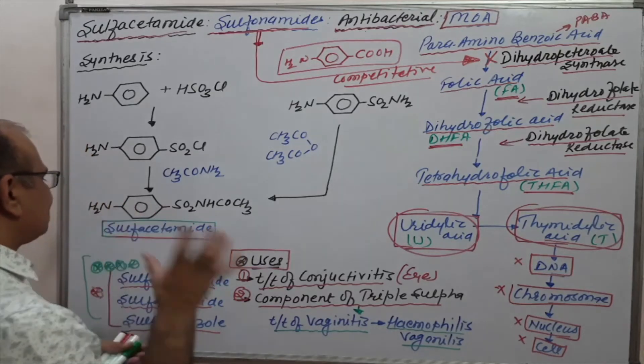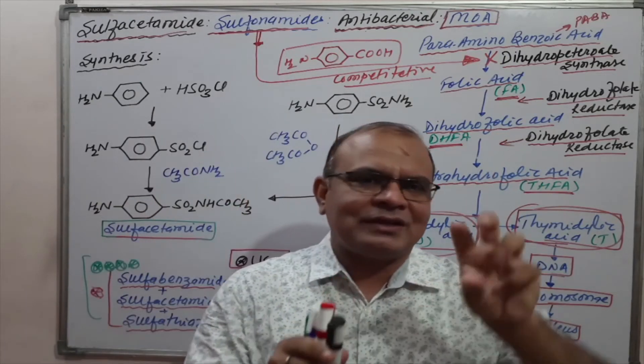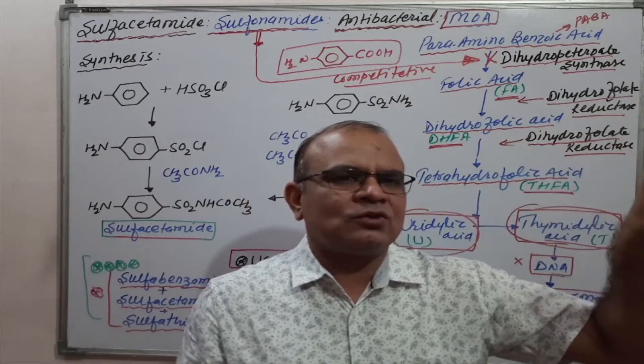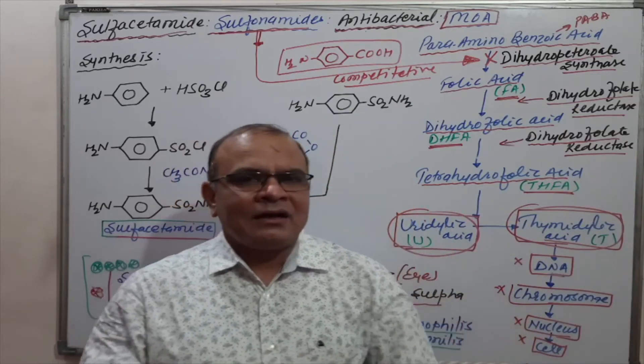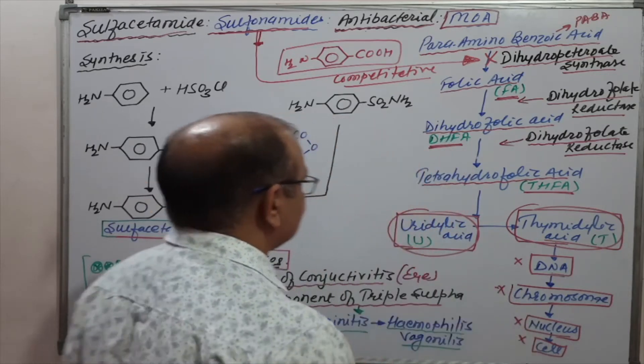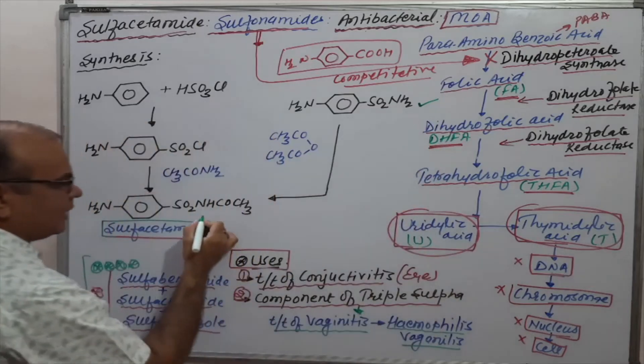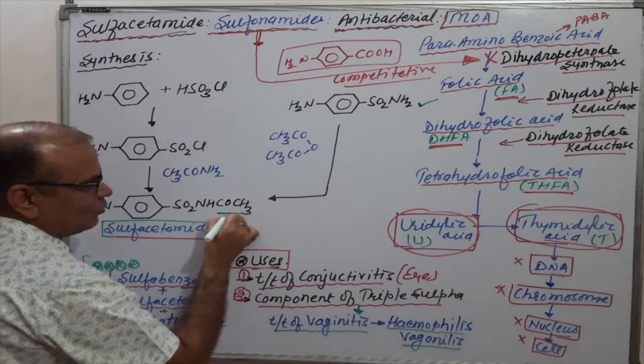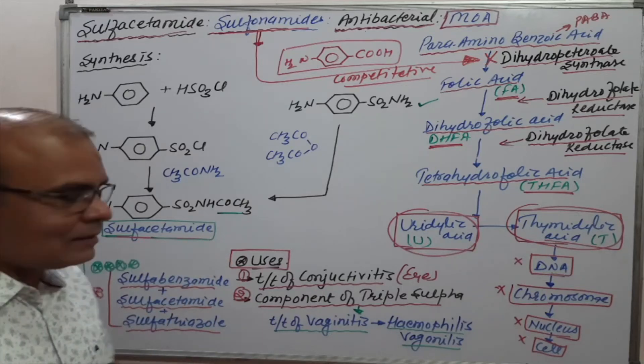Sulfacetamide is a very simple molecule. What is sulfonamide? Sulfonamide is a benzene ring along with the SO2 group having an NH2 group. This is the sulfonamide structure. Sulfonamide having an acetyl group is why it is known as sulfacetamide. The synthesis is very simple.